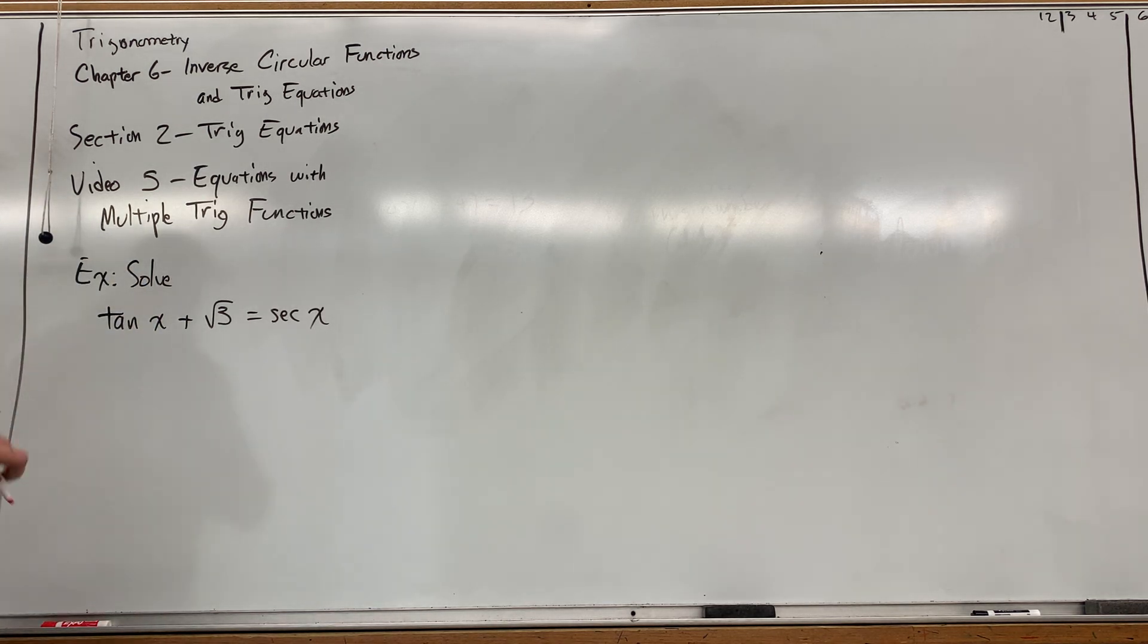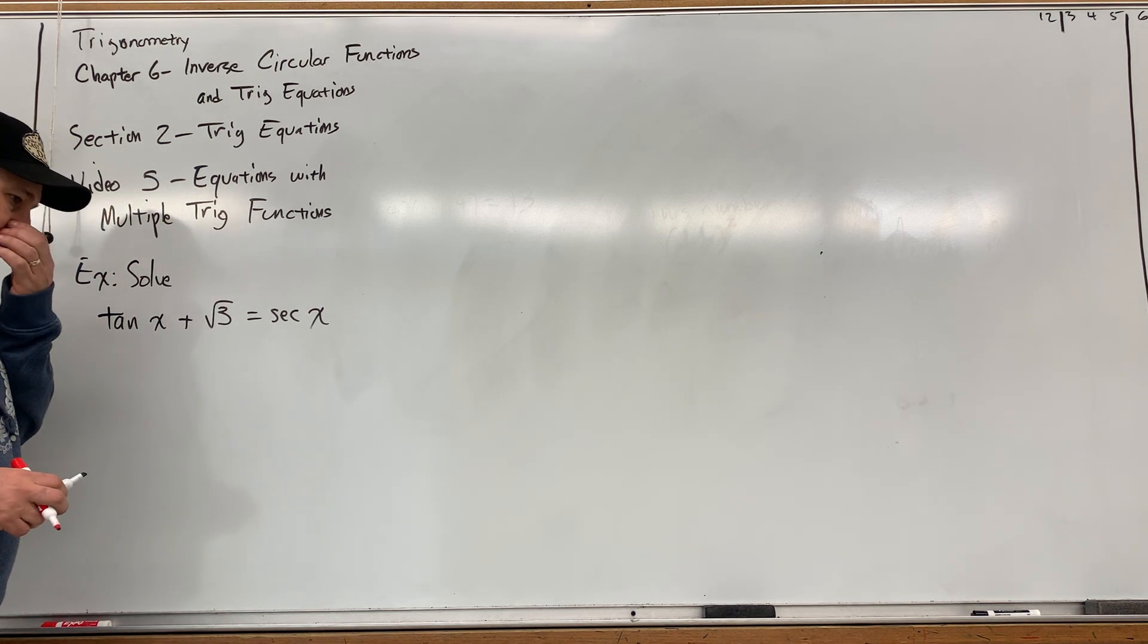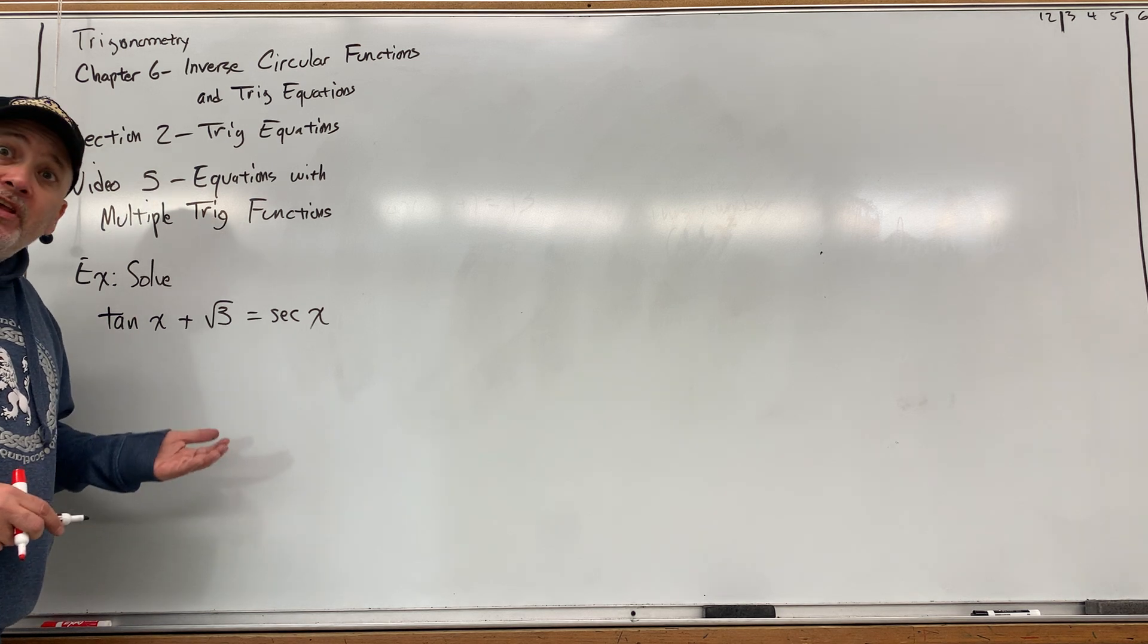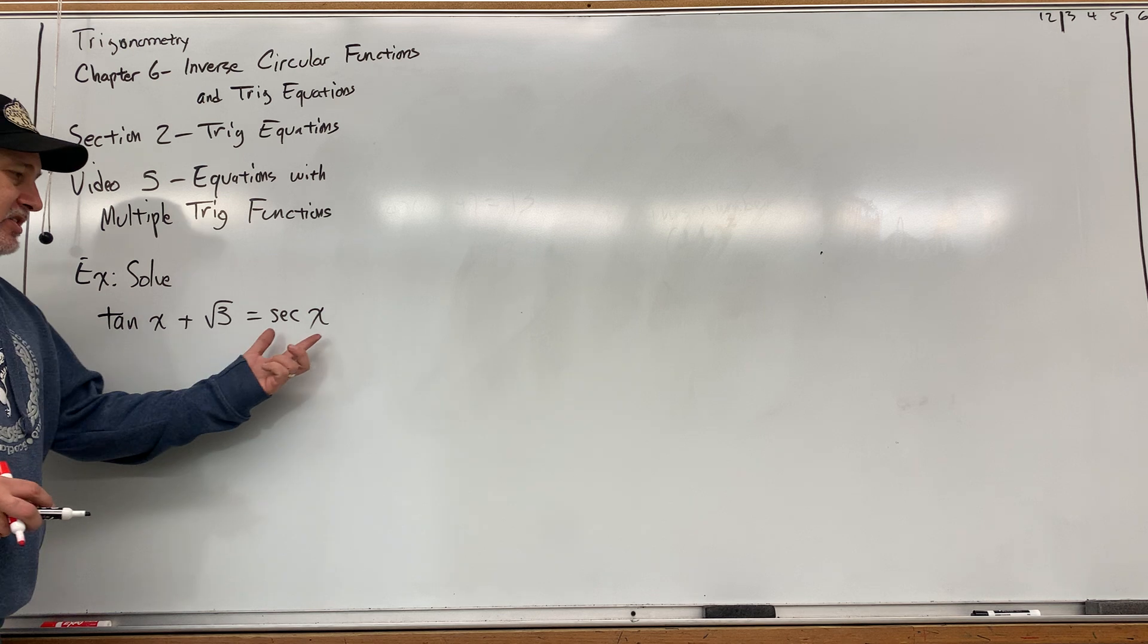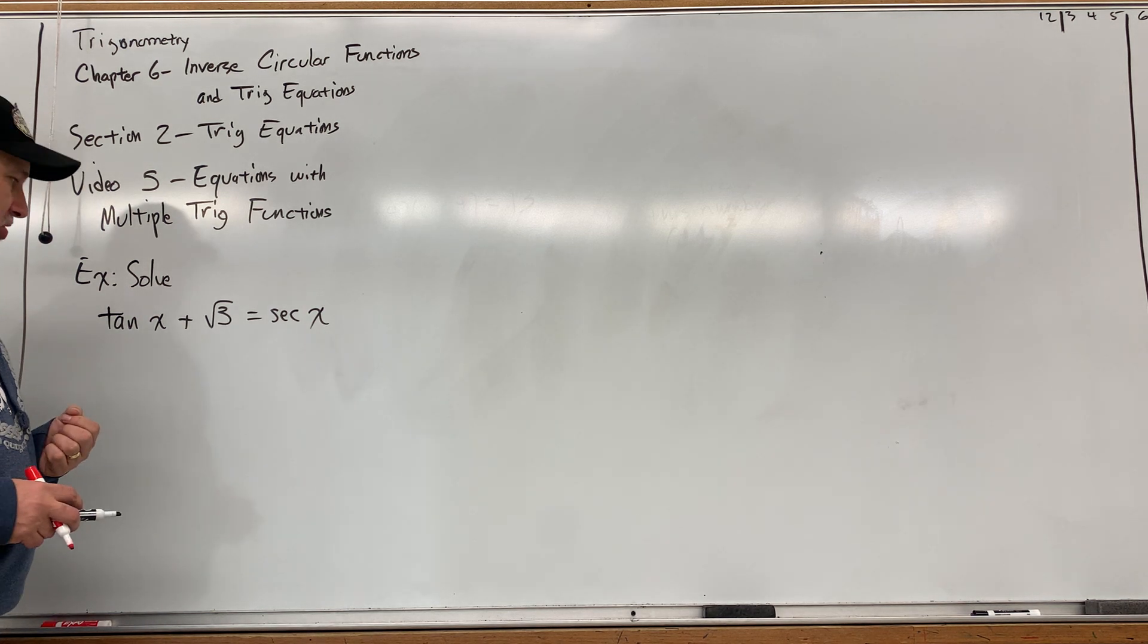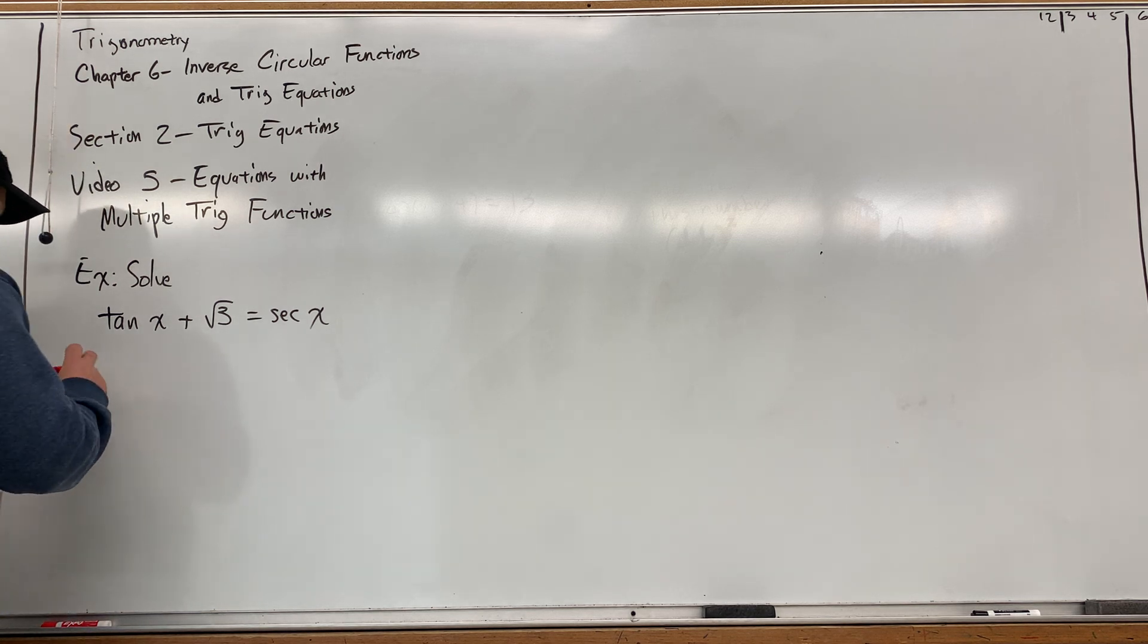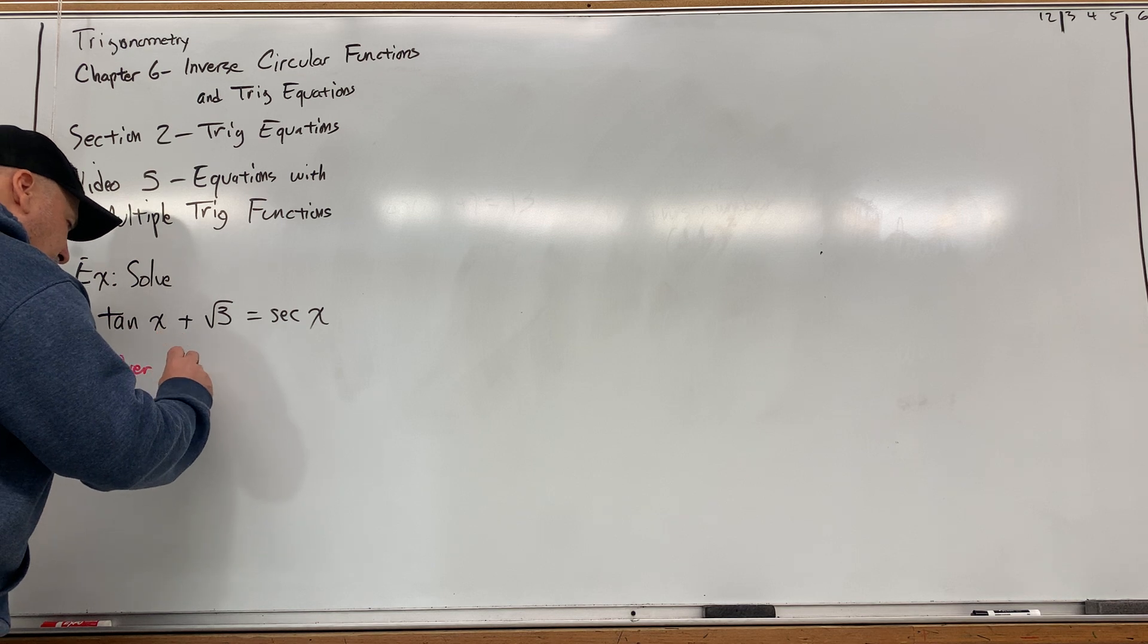tangent of x plus square root of 3 equals secant of x. Now right away we've got a slight issue in terms of determining the period in which to find our solutions, because tangent has a period of pi and secant has a period of 2 pi. So to make sure we don't lose any solutions, we want to default to the larger period, so we're going to first solve this over the interval zero to 2 pi and then we're going to find the general solutions.